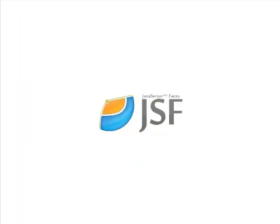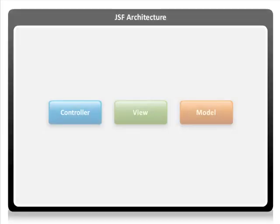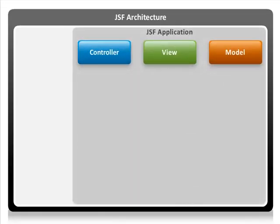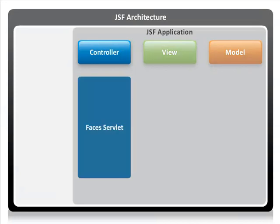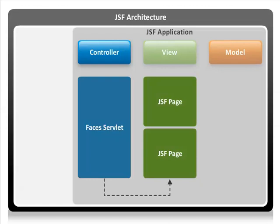JSF technology is based on MVC architecture. JSF architecture mainly consists of three layers: the controller layer, the view layer, and the model layer. JSF comes with a simple controller known as the Faces Servlet. The Faces Servlet acts as a gatekeeper — it controls navigation flow and dispatches requests to the appropriate JSF page.